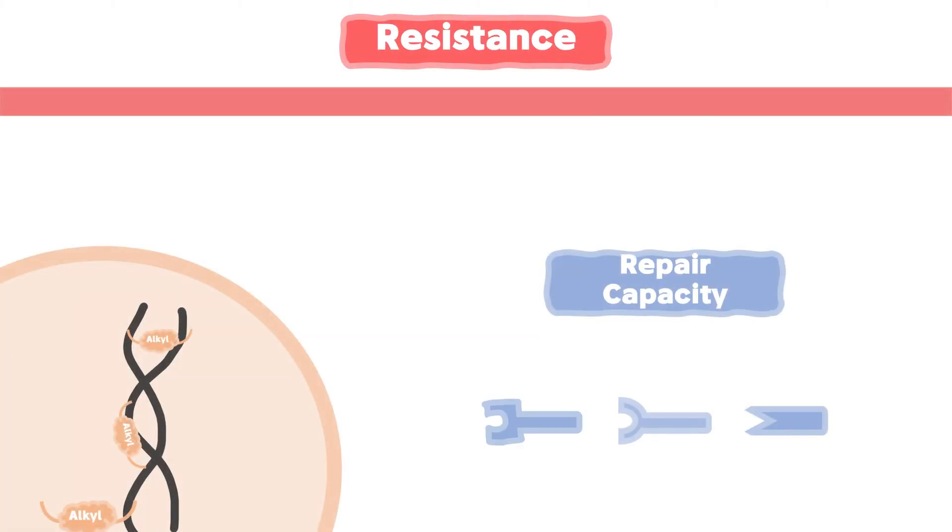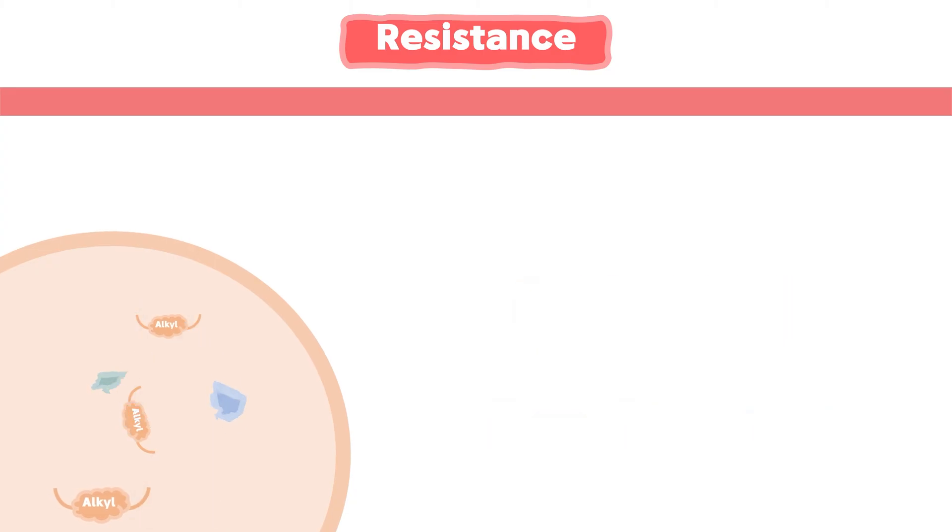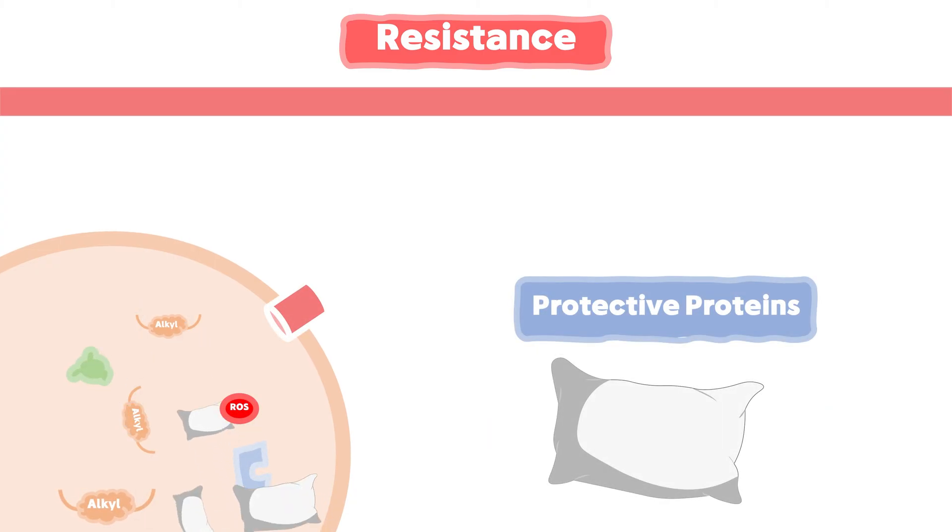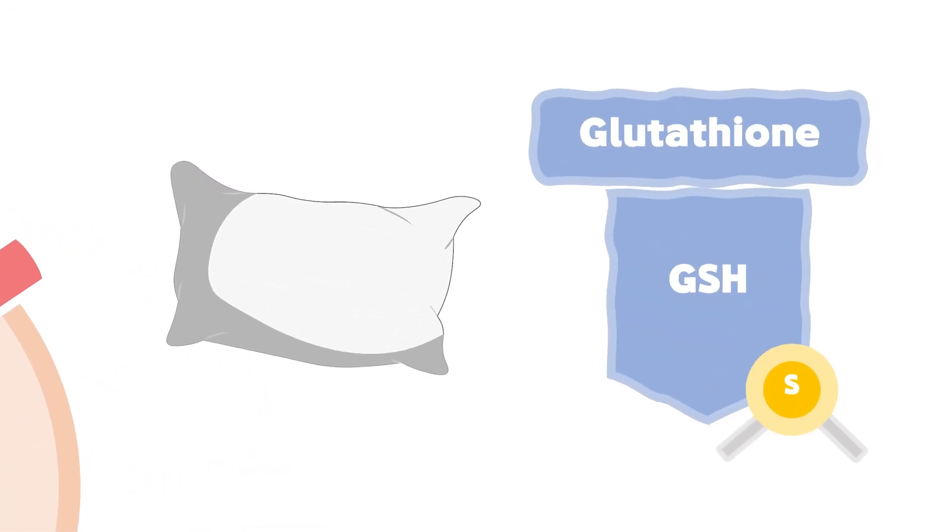Cancer cells can increase the level of DNA repair enzymes specific to the type of lesion. It can also resist by increasing the expression of the scavenging or protective proteins, known as glutathione, as they have exposed thiol groups that attract the reactive alkyls.